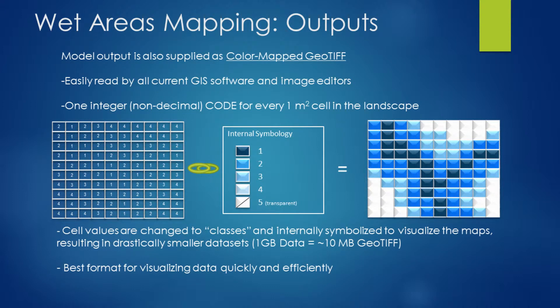The next dataset that most people tend to use first is the wet areas mapping color map GeoTIFF. This is a TIFF dataset that can be opened in Microsoft Paint all the way through to any GIS software. It has an integer code for every single wet areas class across the landscape — values of 1 to 5 representing the various depth of water classes. The value of this format is that rasters up to a gigabyte in size can be compressed down to about 10 megabytes, making it much more efficient for loading onto handheld GPS units for field reconnaissance.